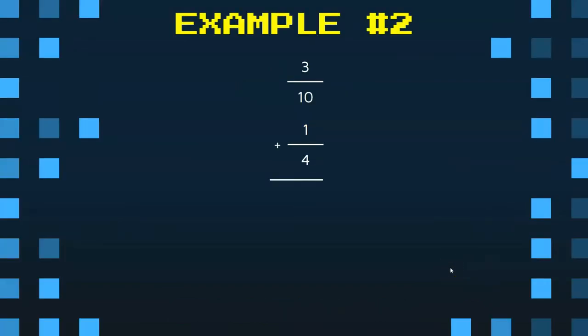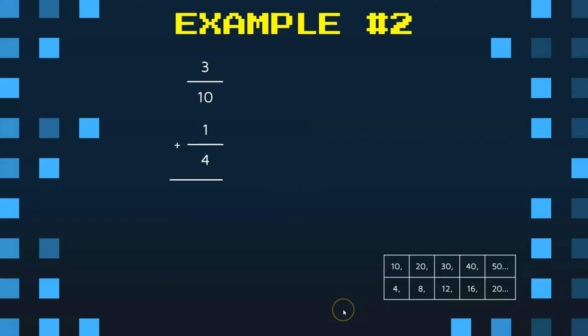Let's do one more example here. Here we can see that 10 and four are different denominators, so I'm going to take those and find a common denominator, the least common denominator, or least common multiple. And we can see that 20 is the least common multiple.